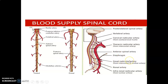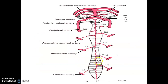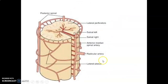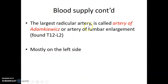We have what is called the great radicular artery — the artery of Adamkiewicz, also called the artery of lumbar enlargement. It is usually found between T12 and L2, and mostly on the left side. You need to add this to the arterial blood supply of the spinal cord: the great artery of Adamkiewicz, the artery of lumbar enlargement, at T12 to L2, mainly on the left side.